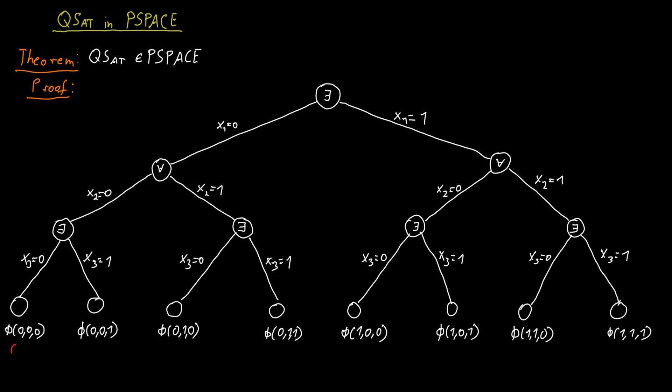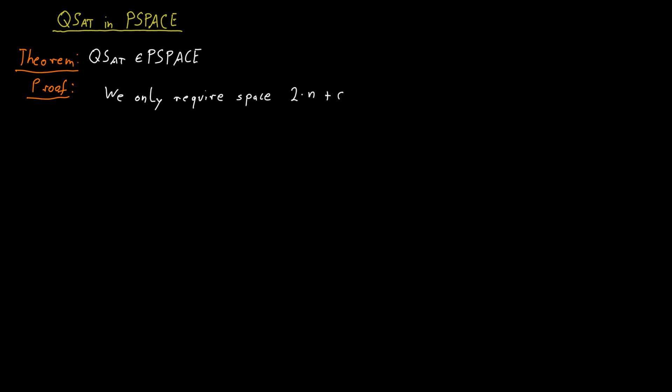The crucial observation is that we don't need to memorize all the values at the same time. Once we've determined the value of a node, we can forget the values of all its descendants. I claim the total space requirement is no more than 2 times the height of the tree — which is the number of variables — plus C, the space needed to evaluate the formula for a specific truth assignment.